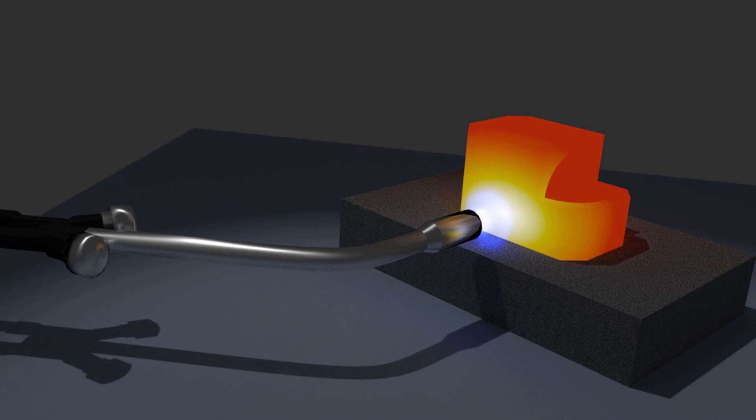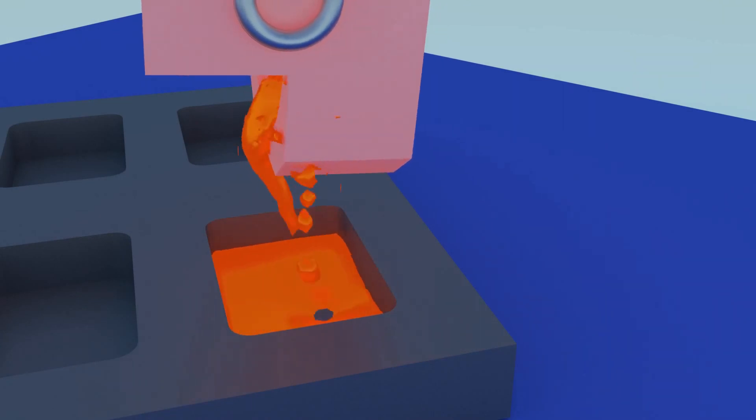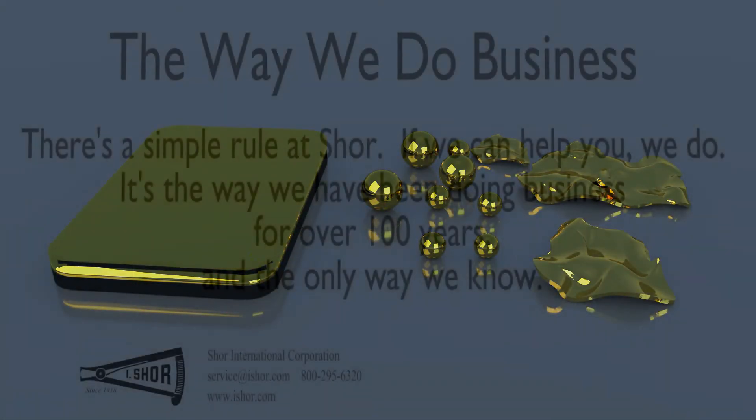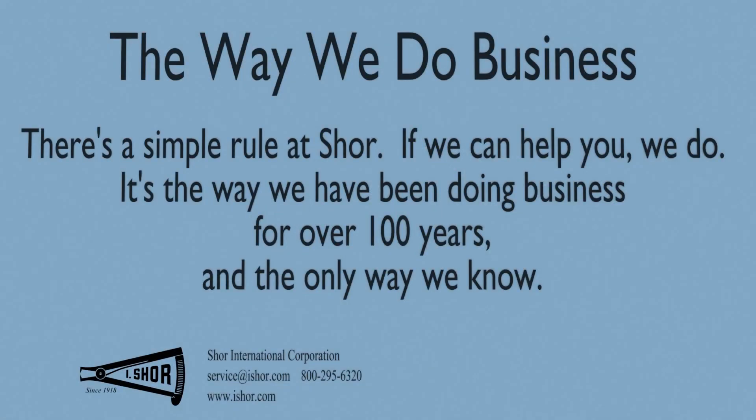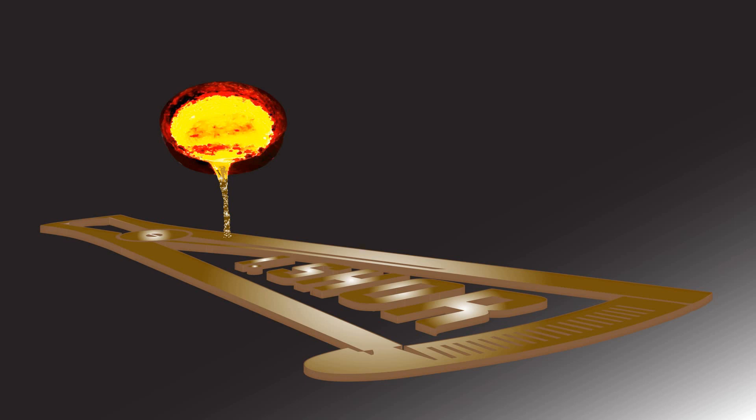Melt your metal. When it flows like water, pour it into an ingot mold to make a bar of gold, or pour it into ice water to make shot. If you have any questions regarding melting or any other part of the refining process, please feel free to contact Shor. We will be happy to help you. Remember, the only stupid question is the one you don't ask.